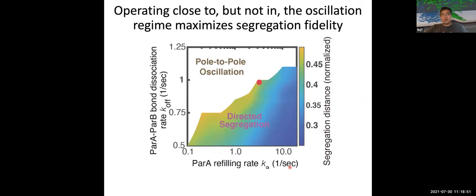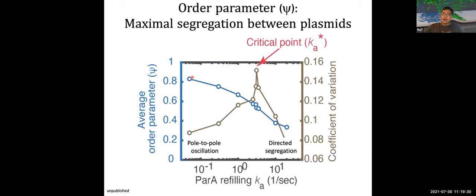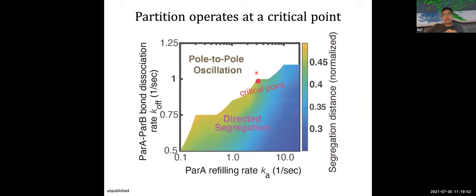Now I'm going to reframe this partition problem in the language of statistical mechanics. We define the order parameter of plasmid segregation as the maximum segregation distance between the two plasmids, normalized by the nucleoid length. The order parameter is very small when the system is deep in the directed segregation regime, and it increases continuously towards the pole-to-pole oscillation regime — very similar to a second-order phase transition. At the tipping point between the two phases, the variation of the order parameter maximizes, corresponding to maximum oscillation amplitude. By definition, that is the critical point.